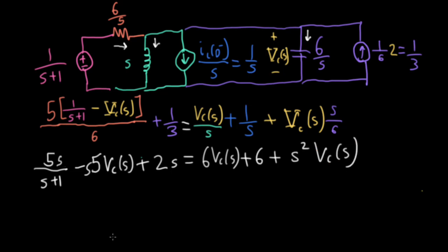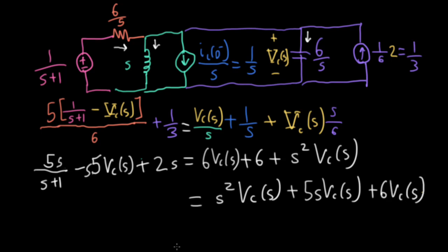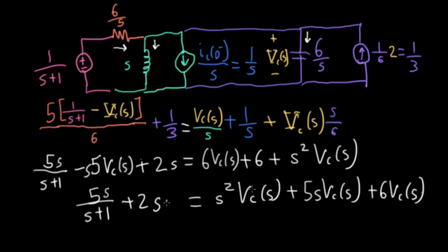Let me move everything with V_C(S) over to one side. I'll have S²·V_C(S), then moving the minus 5S·V_C(S) term gives plus 5S·V_C(S), and plus 6·V_C(S). On the left I'll have 5S over (S+1) plus 2S minus 6, from moving over that 6 term.